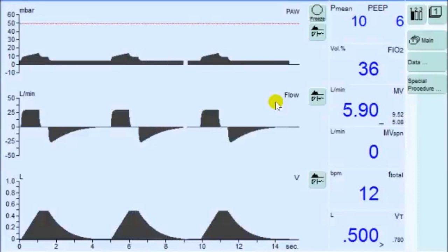PEEP, and the upper pressure level, inspiratory pressure. The volume and the decelerating flow are the resulting variables and can vary dependent on changes in the lung mechanics.